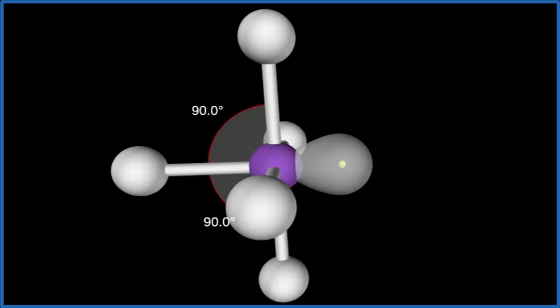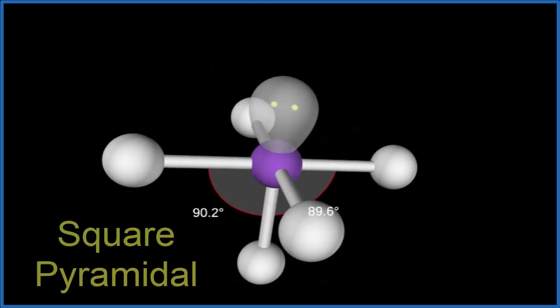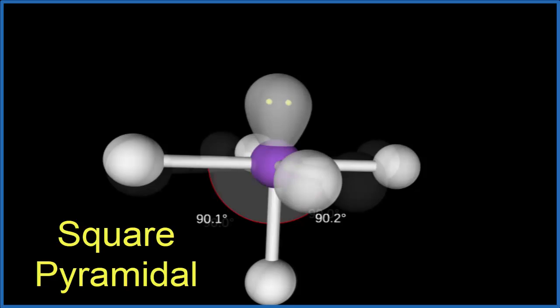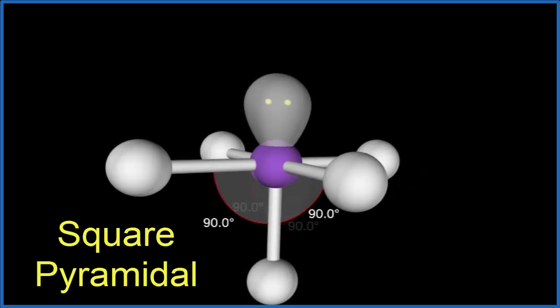When we do that, we end up with what we call a square pyramidal molecular geometry. You can see the 90-degree bond angles, the right angles,